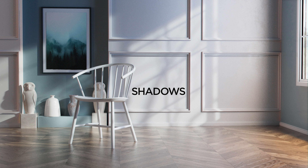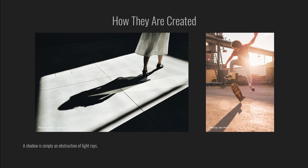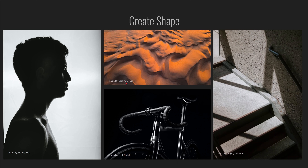How are shadows created? Simply put, it's just the obstruction of light rays. Everywhere in the world we have light rays bouncing in every direction, and if those light rays get obstructed by an object, a shadow is created. Something moves in front of light rays, the light has to go around it, and therefore a negative space is created — hence the shadow.